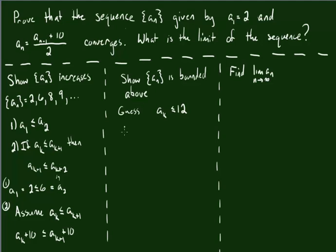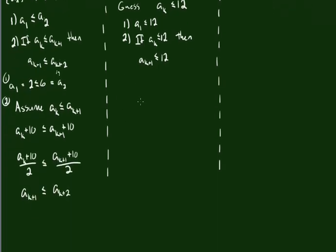Now, we're going to do the same process here that we did on the other side. We're going to show that a_1 is going to be less than or equal to 12 — that's not too difficult. And we're also going to show that if a_k is less than or equal to 12, then a_{k+1} is also less than or equal to 12. So for part 1: a_1 is equal to 2, and 2 is definitely less than or equal to 12. So we've got part 1 done — we have proven that a_1 is less than or equal to 12.